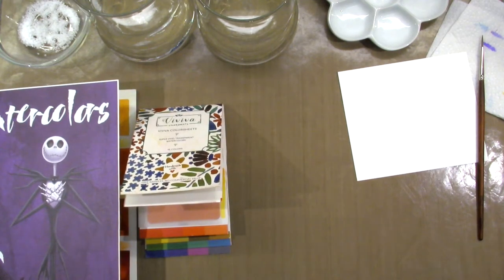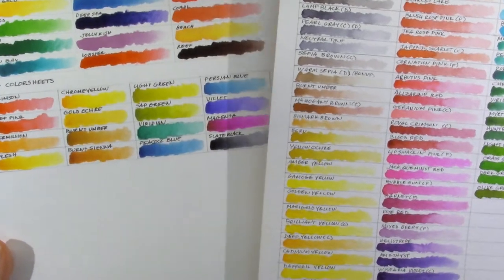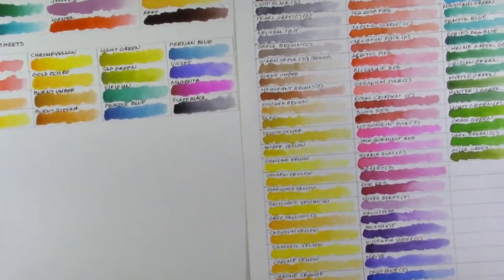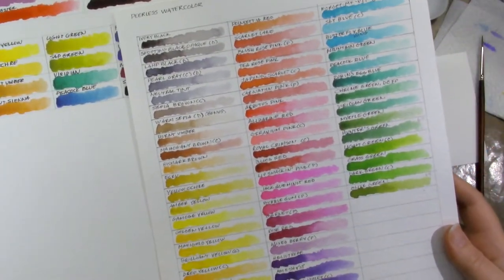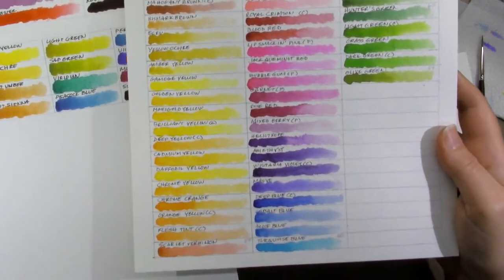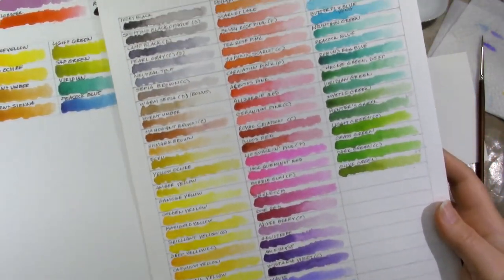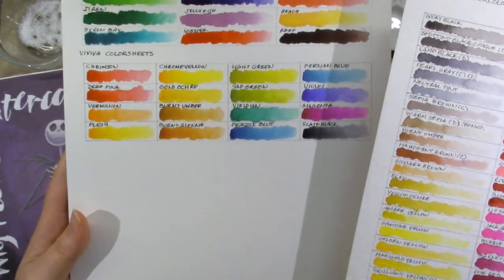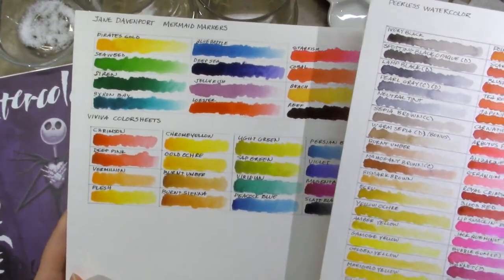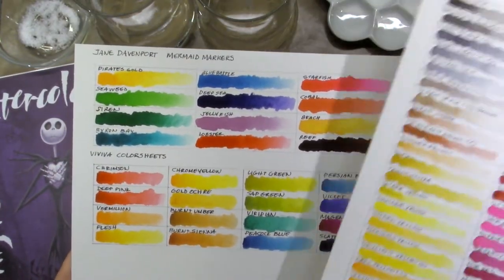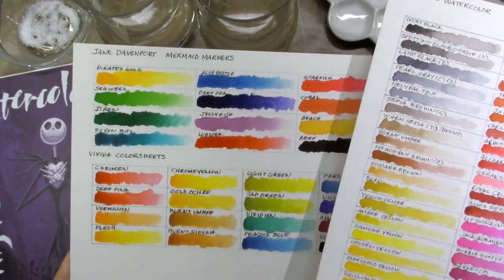Next up are my color swatch sheets. I make these for every watercolor or any color sets that I have, so I can see the true colors. I try to make them on the paper that I'm going to be using. Here's a look at the Peerless, and also of the Viviva color sheets, which is actually on the same page as the Jane Davenport mermaid markers, because they are also very similar in brightness and pigmentation.